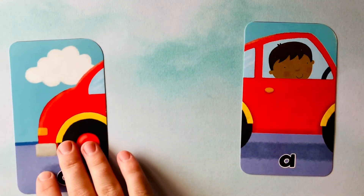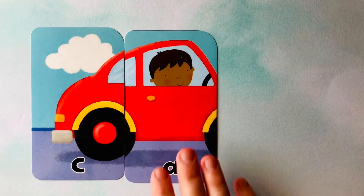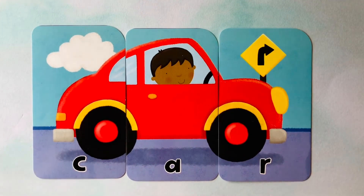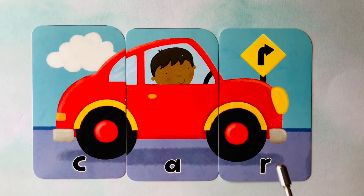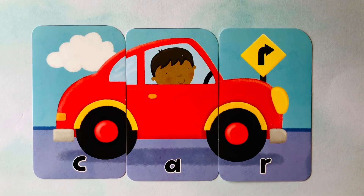Car starts with a C. Next is an A and it finishes with an R. Car is spelled C-A-R. Car. C-A-R. Can you spell it with me one more time? How do you spell car? It's spelled C-A-R. Car. You did a fabulous job learning to spell words.